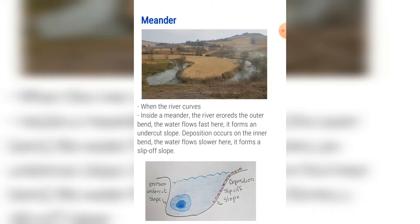Deposition occurs on the inner bend where the water flows slower, forming a slip-off slope. In the above photo, the undercut slope is the slope closest to us and the slip-off slope is the slope furthest away. The bottom picture is a cross section of what a meander looks like, showing the slip-off slope and the undercut slope.